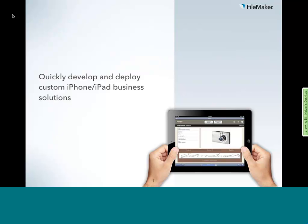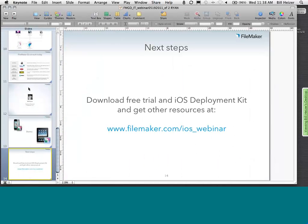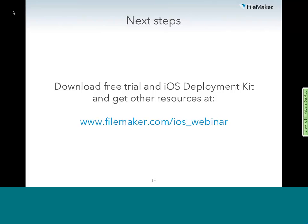Another question: how much does this all cost? FileMaker Pro starts at $300 per seat for the clients — the minimum you'll need is at least one copy. FileMaker Go, which allows you to run FileMaker on the iPhone or iPad, costs $20 per iPhone and $40 per iPad — quite cost effective. You can expand from there with volume licenses for FileMaker Pro. Servers start at $1,000 for our basic server, and there's an advanced server at about $3,000.